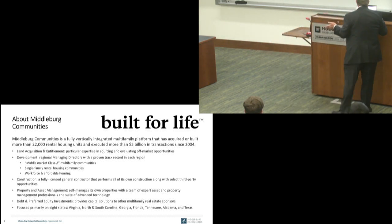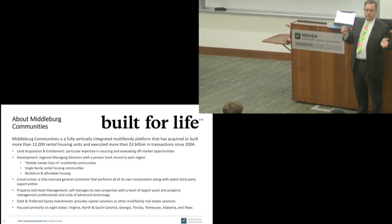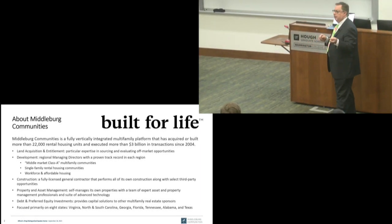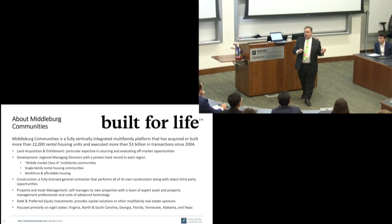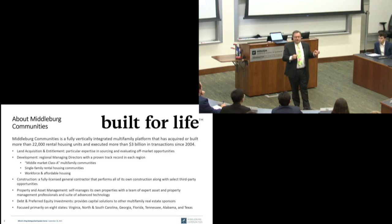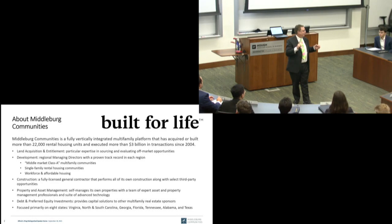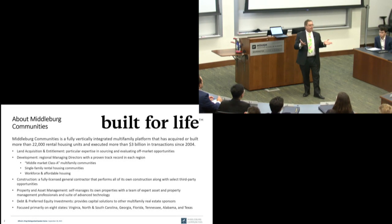We focus on eight states from Virginia down to Texas — Virginia, North and South Carolina, Georgia, Florida, Tennessee, Alabama. We actually don't have anything going on in Texas right now, so it's really seven states. We also own almost nothing right now because back in 2020 and early 2021, it was a terrific time to sell property, and we sold everything we owned except for one property in Atlanta. We now own that plus another one near Orlando.